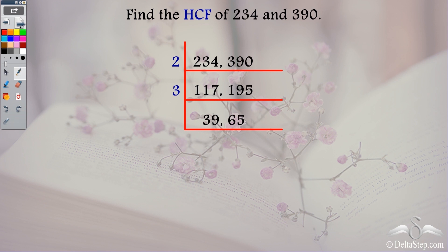Now 39 and 65. Check for 3. You will find that 65 is not divisible by 3. So I check for the next prime number which is 5. 65 is divisible by 5 but 39 is not. I check for the next prime number which is 7. 39 is not divisible by 7. What is the next prime number? 11.